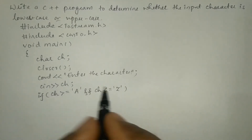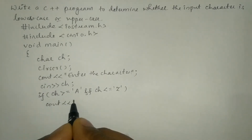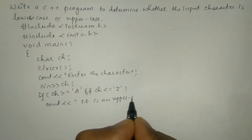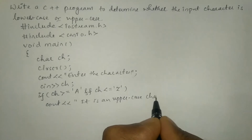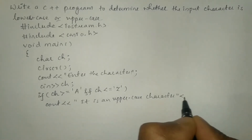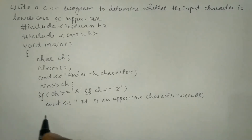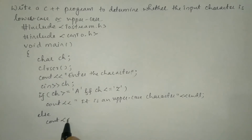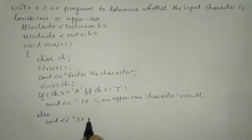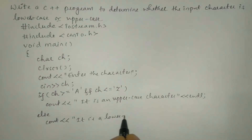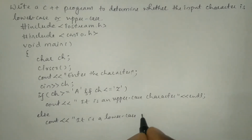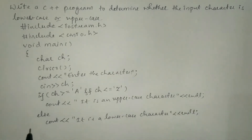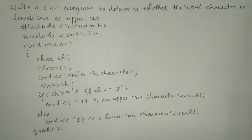If the entered character lies between capital A to capital Z then it is an uppercase letter. Here I'm going to write cout with the stream insertion operator: "It is an uppercase character" followed by endl. Then the else part will execute: cout "It is a lowercase character" followed by endl. Then I'll write the getch function and the closing curly brace for main.